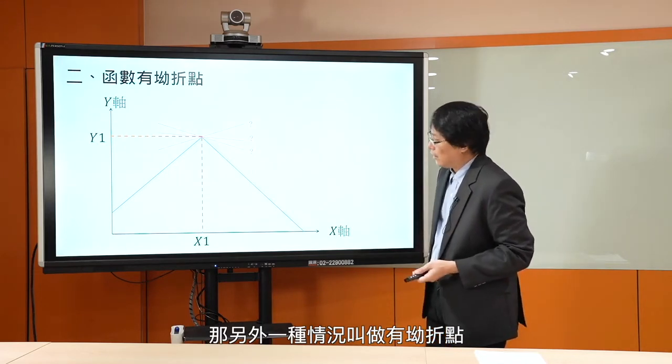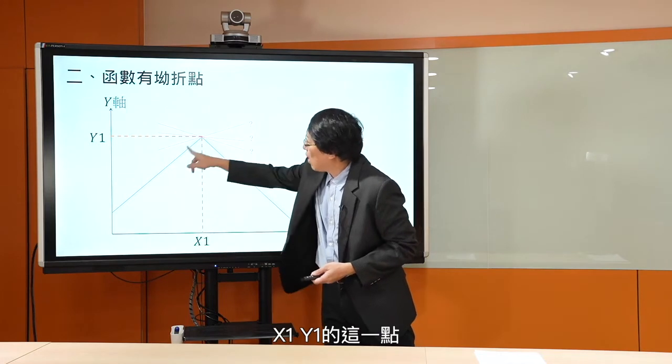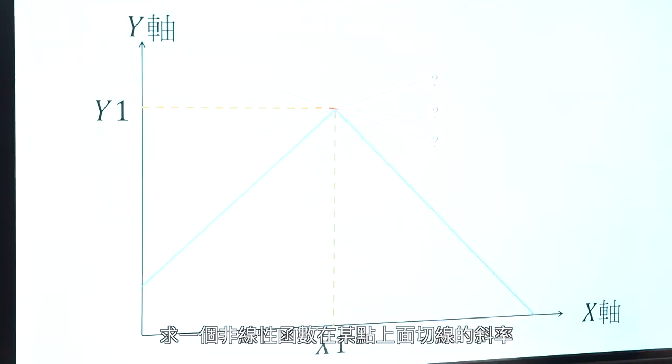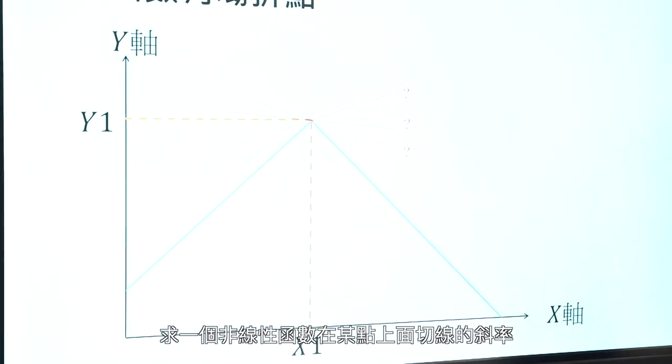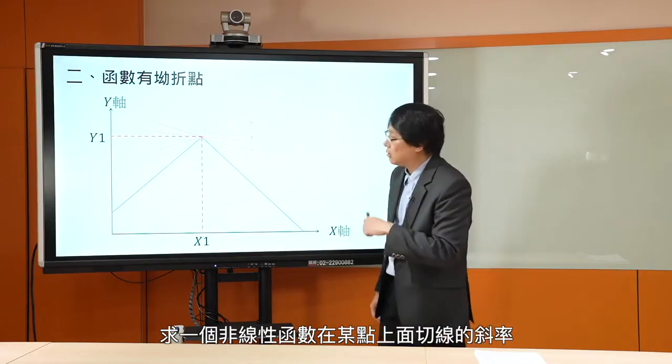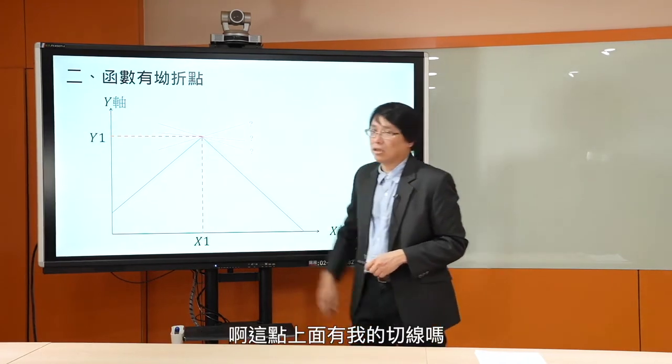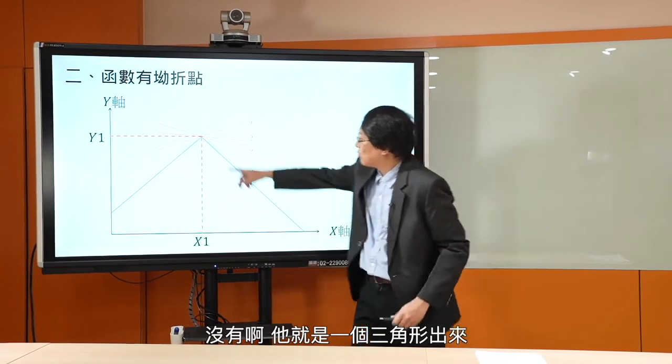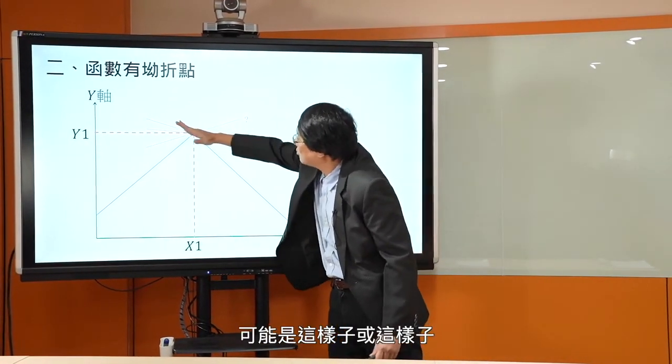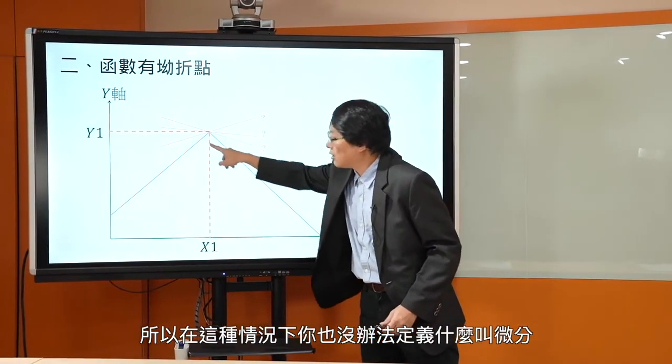另外一个情况叫做有凹折点。对x1、y1的这一点，微分是求一个非线性函数在某点上面切线的斜率。这点上面有切线没有？他就是三角形出来一个凹折点，可能是这个样子，可能是那样子，你也不知道。所以在这种情况下，你也没有办法定义什么叫做微分。